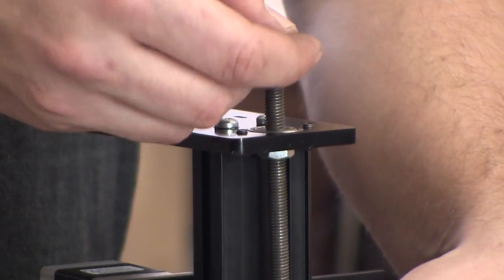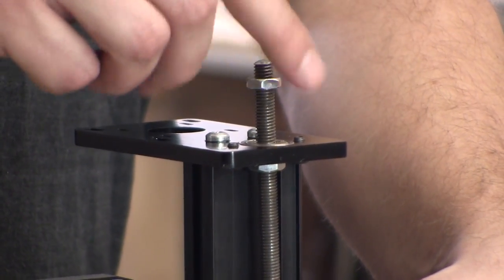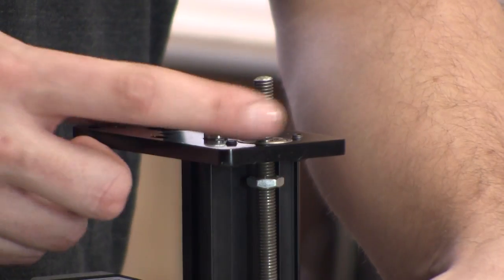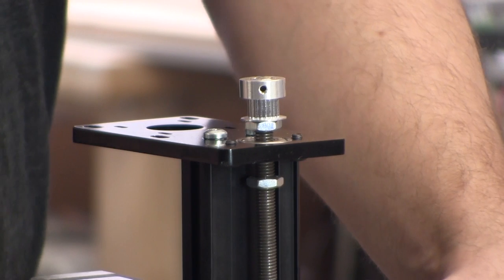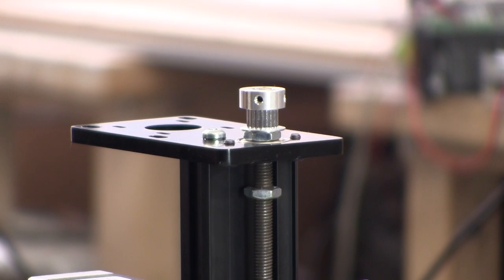You'll put a second hex nut onto the threaded rod and screw it down the length of the pulley. Check to make sure that it's the length of the pulley by setting the pulley on the threaded rod on top of that hex nut. The threaded rod should be flush with the top of the pulley.